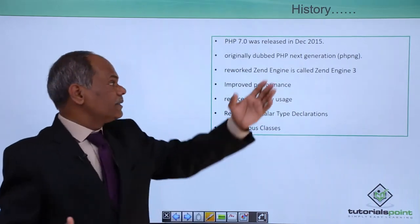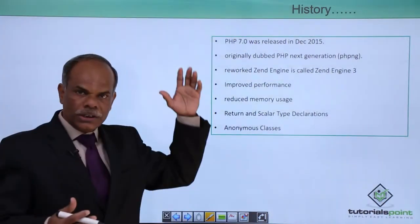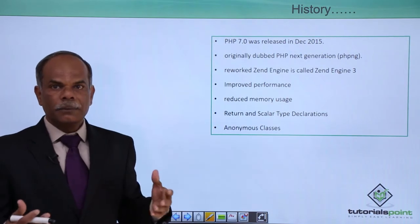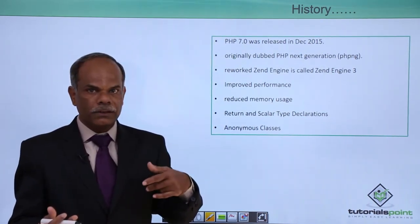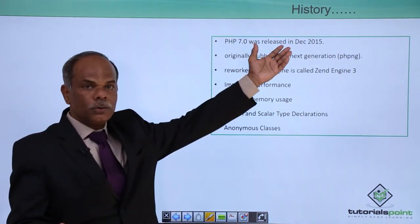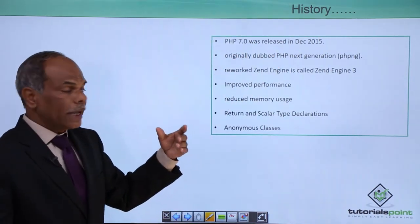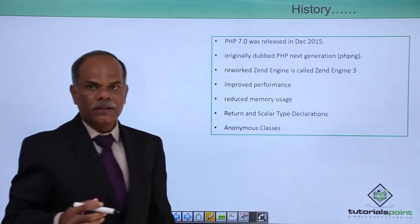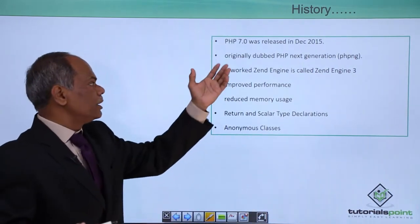As recently as December 2015, PHP 7 was introduced. If you look at the series of PHP versions — version 3, version 4, version 5 — version 6 never came about, and in December 2015 PHP 7.0 was released. It was originally named PHP Next Generation or PHP NG, but later it was recognized as PHP 7.